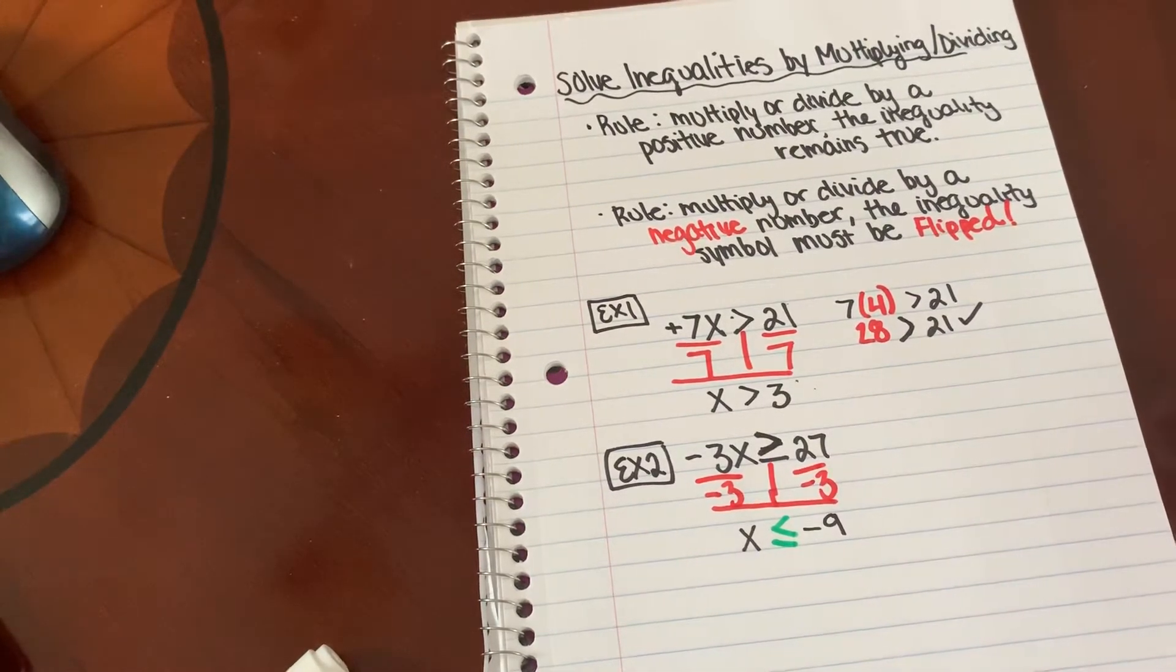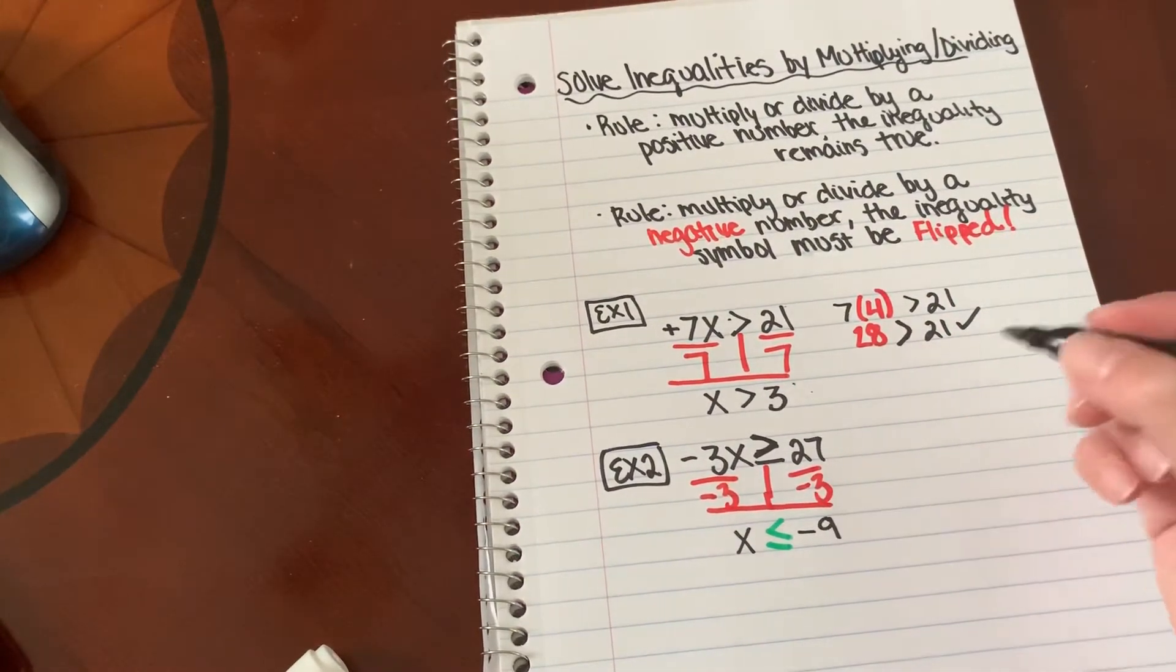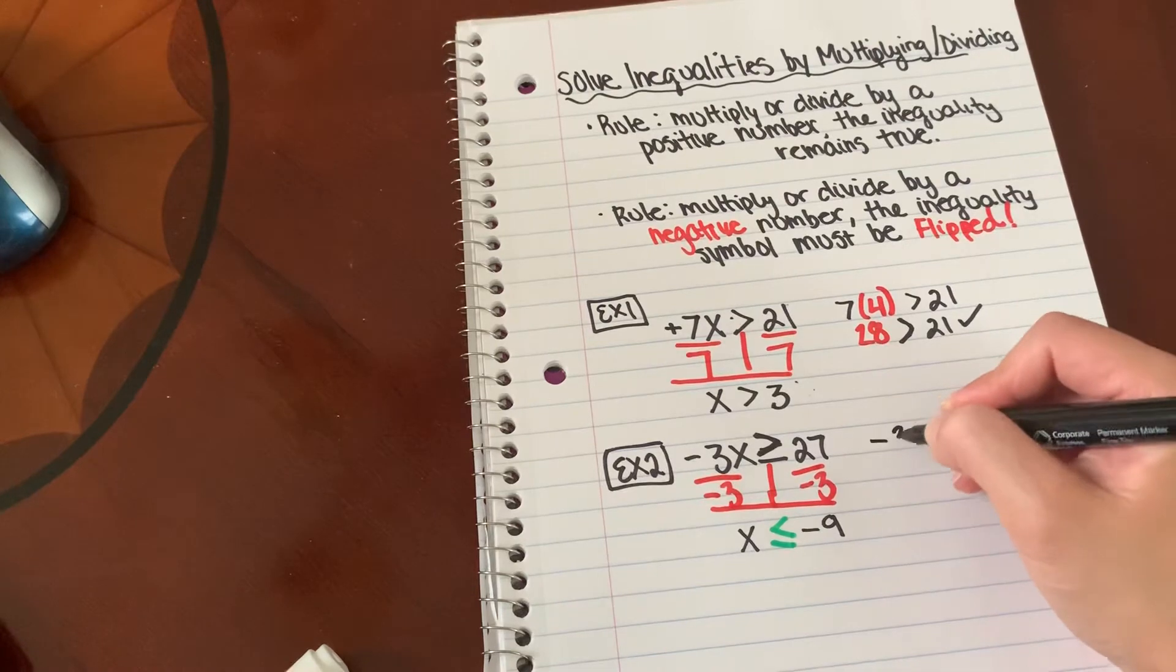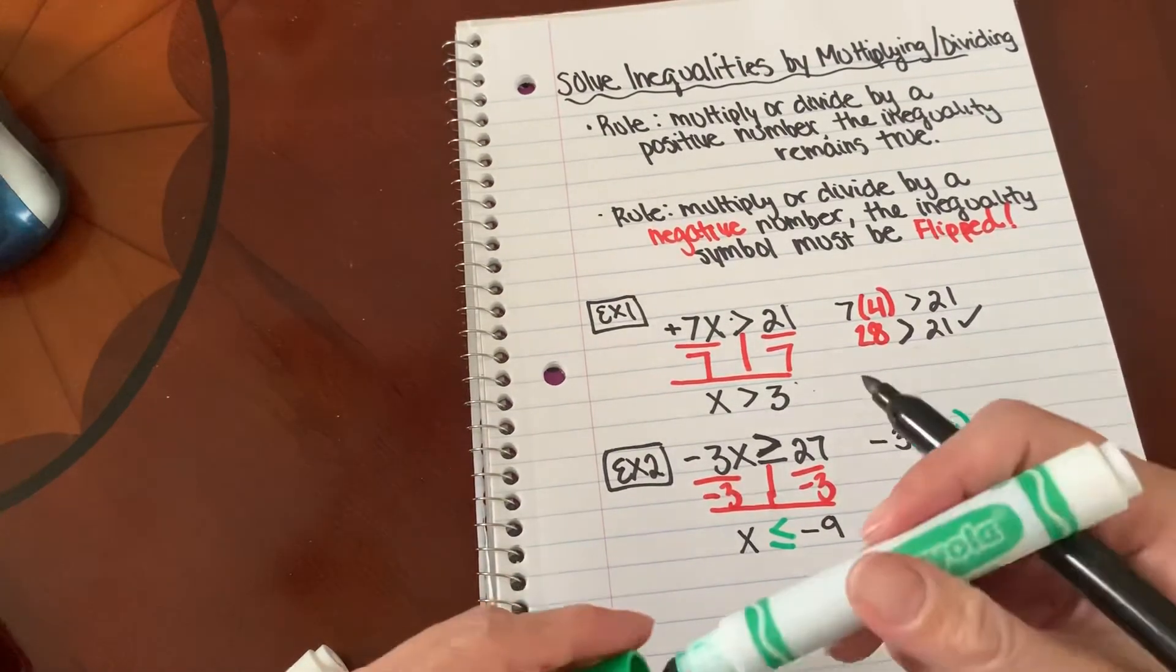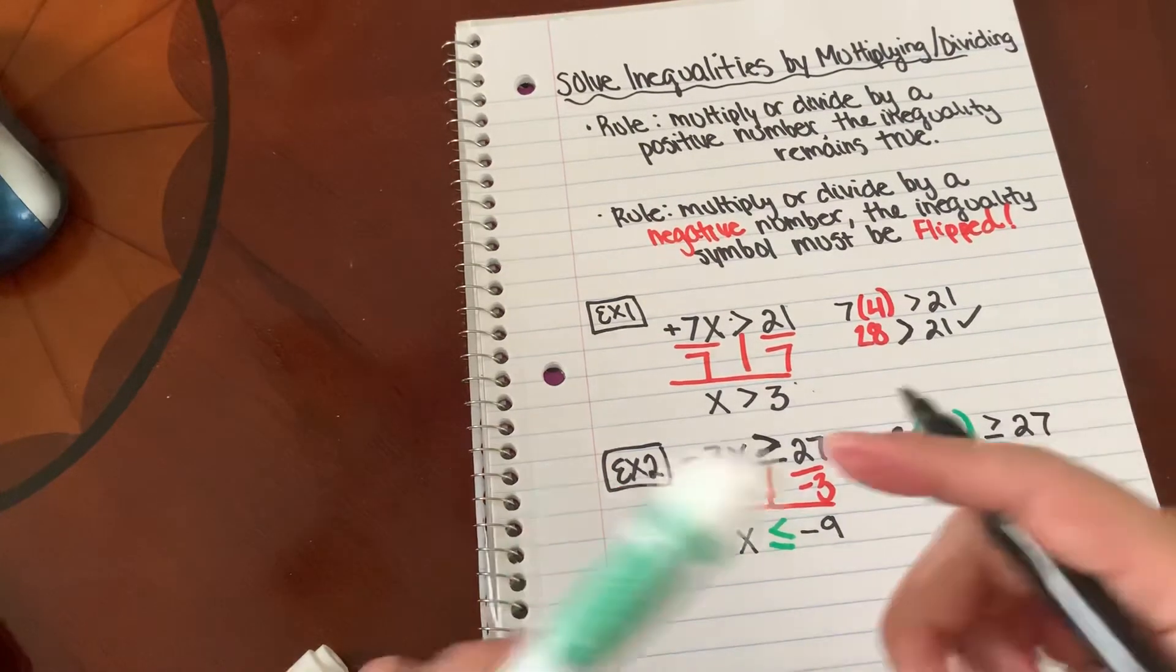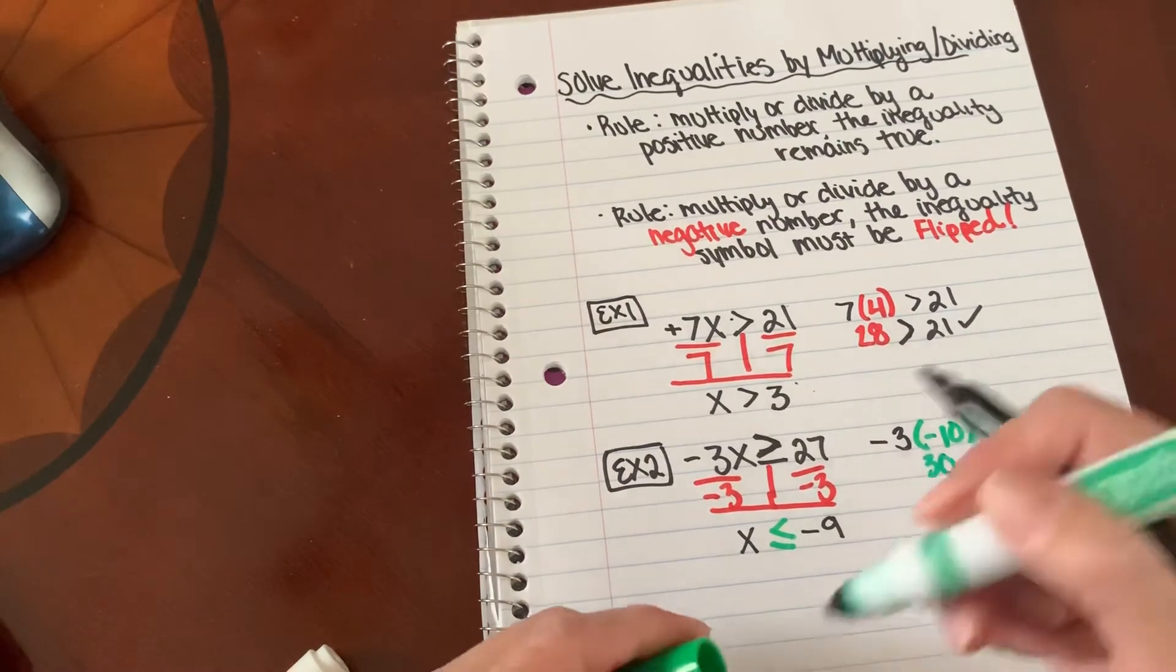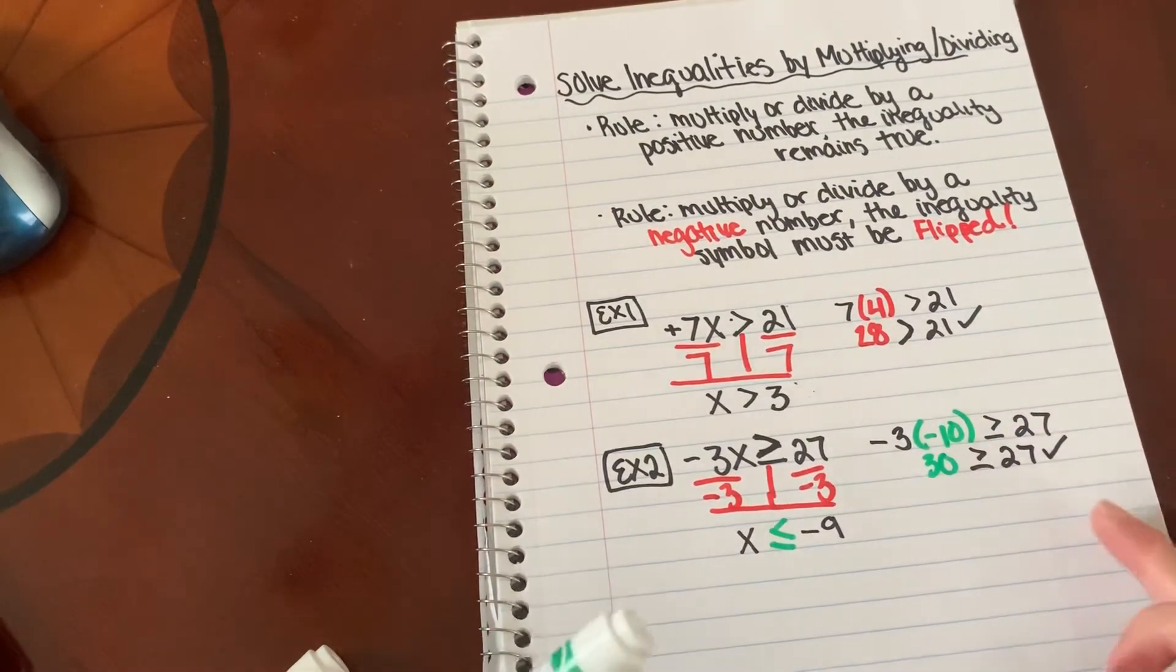Now I can check my answer to see if the inequality remains true. So what is less than negative 9? Well, I can pick negative 10. So negative 3 times negative 10, is that greater than or equal to 27? Negative 3 times negative 10 is 30, and that is greater than or equal to 27.